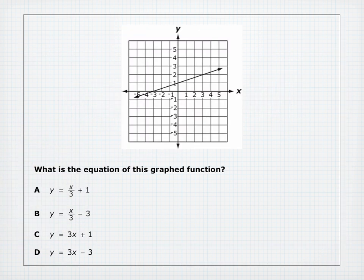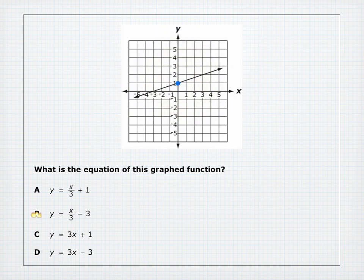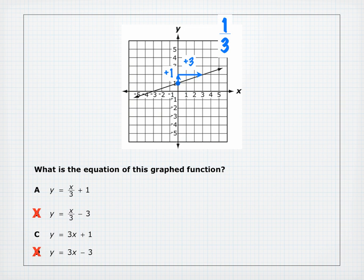What is the equation of this graphed function? The Y-intercept is at positive 1 — eliminate B and D. Count the slope: from one point, go up 1 and right 3, giving slope 1 over 3. Answer A says Y equals X over 3 plus 1, and dividing by 3 is the same as multiplying by one-third, so A is the correct answer.